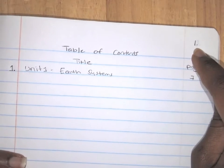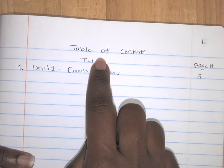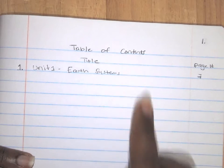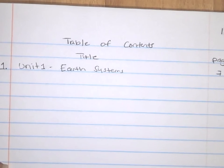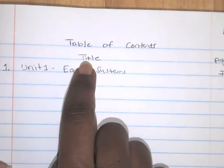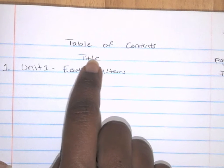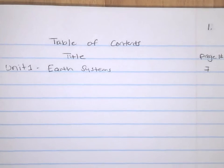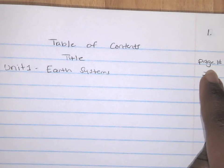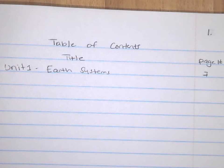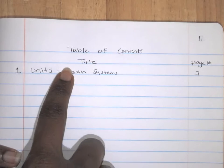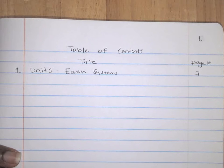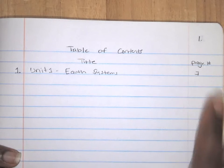Your first page, page one, you're going to write 'table of contents.' Then you're going to write a title and page number. So in your table of contents, for each part of your notebook, you'll have a title in this space and then a page number over here.